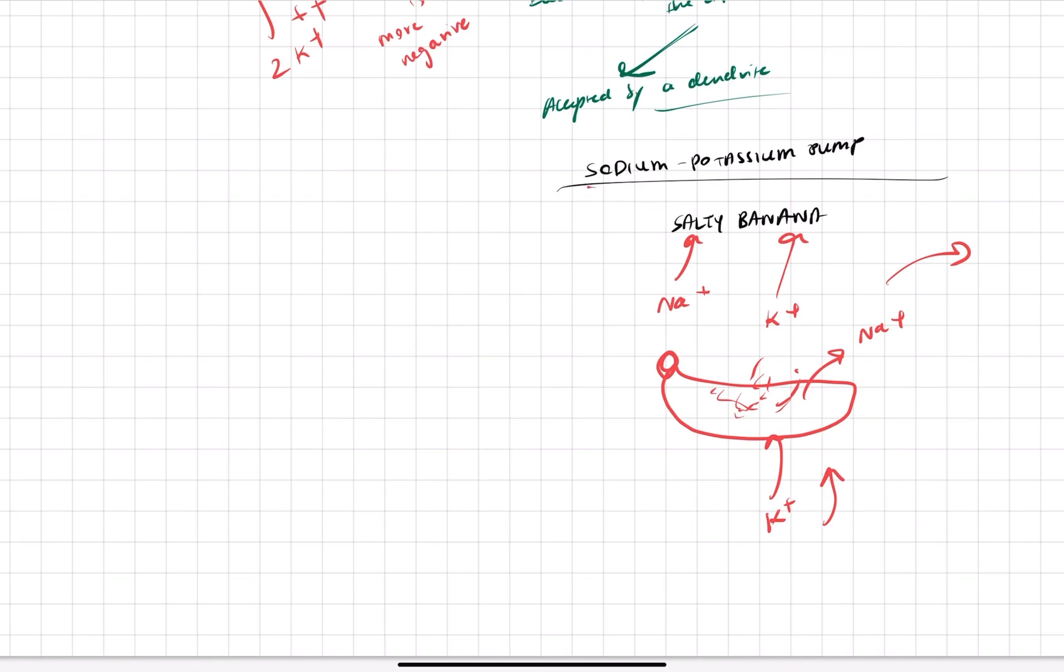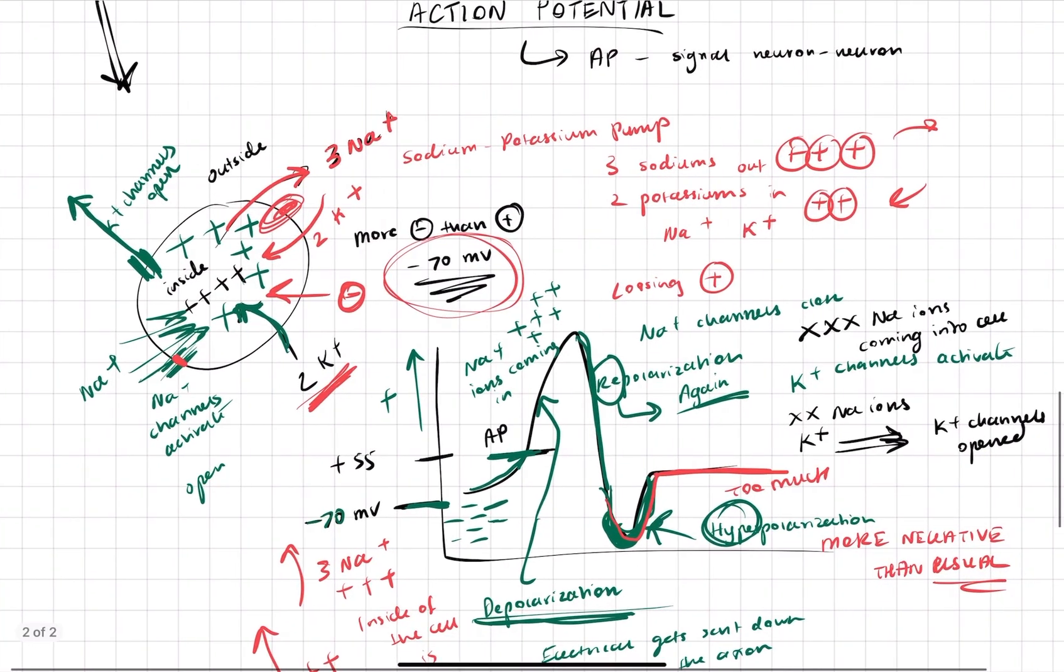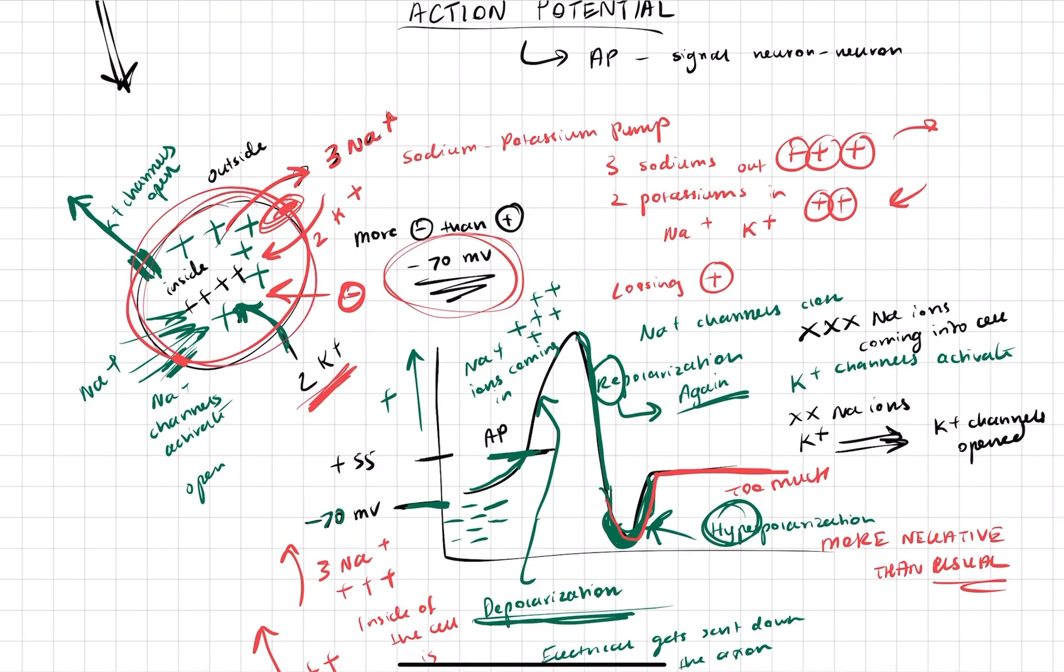So sodium is going out and potassium is coming in. And then I like to just think sodium-potassium pump 3, 2, 1. So 3 is for sodium, 2 is for potassium, 1 is just for pump. So 3, 2, 1, sodium-potassium pump. 3 sodiums out, 2 potassiums in. So that's what's allowing our cell to maintain this usual positiveness.